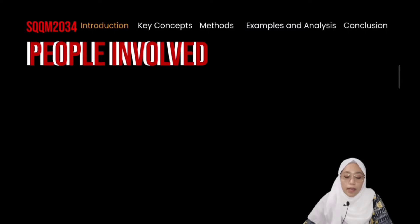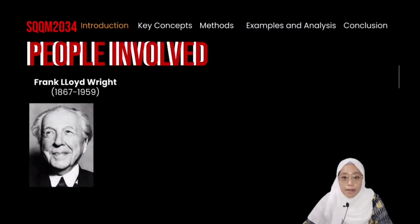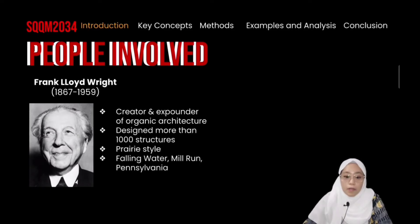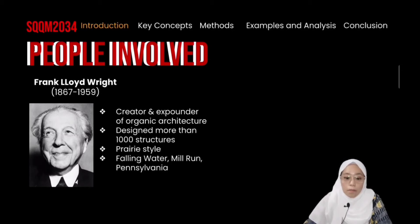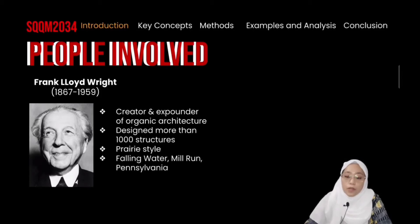A notable person involved in the architecture field is Frank Lloyd Wright. He was born in 1867 and died in 1959. He is the creator and founder of organic architecture. He designed more than 1,000 structures, and his style was called Prairie Style. He is the person who built the Fallingwater in Mill Run, Pennsylvania.